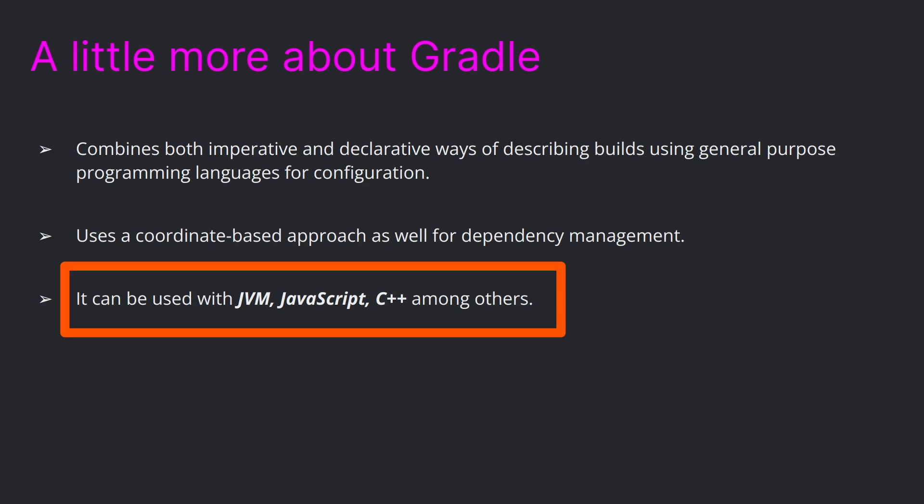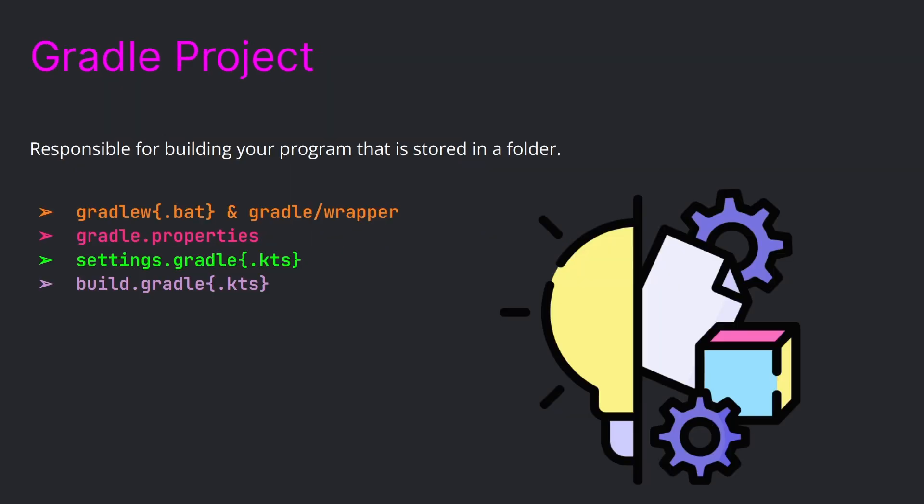Due to its versatility and extensibility, Gradle can be used in areas outside of the JVM, including JavaScript and C++. A Gradle project is stored in a folder that typically contains the gradlew or gradlew.bat file, along with the gradle directory and the Gradle wrapper subdirectories. These store a local copy of a specific Gradle version and ensure your project's builds are self-contained, making your builds run independently of the operating system.